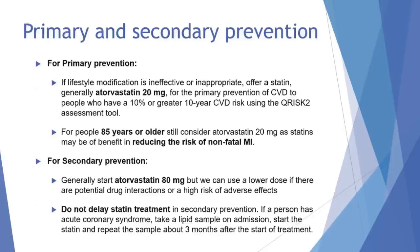If lifestyle modification is ineffective or inappropriate, we will offer atorvastatin 20 milligrams for the primary prevention of cardiovascular risk to people who have a 10% or greater 10-year risk of developing cardiovascular disease using the Q-risk assessment tool. For people 85 years or older, we should still consider atorvastatin 20 milligrams because statins may be of benefit, reducing the risk of non-fatal myocardial infarction. For secondary prevention, we will generally start atorvastatin 80 milligrams, and we can use a lower dose if there are potential drug interactions or a high risk of adverse events.